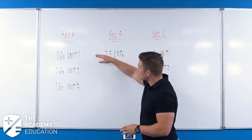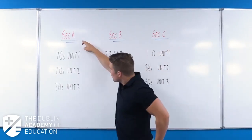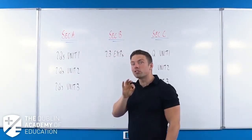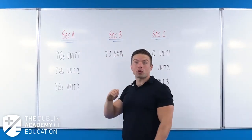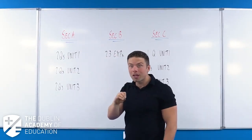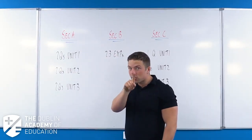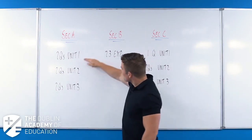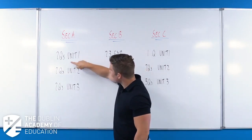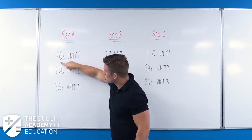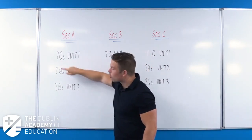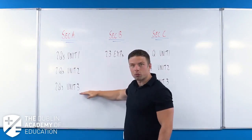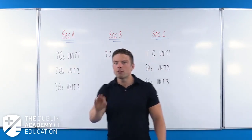In Section A, there are six questions and in a normal Leaving Cert year you have to answer five. The more important thing is that two of these questions have to come from Unit One, two have to come from Unit Two, and two have to come from Unit Three.